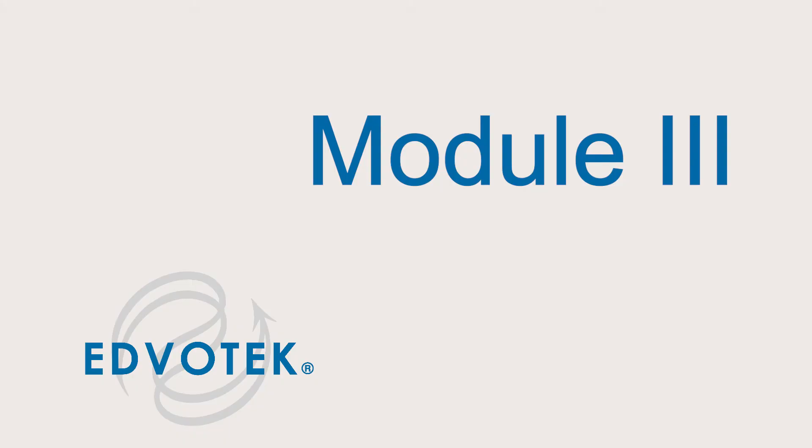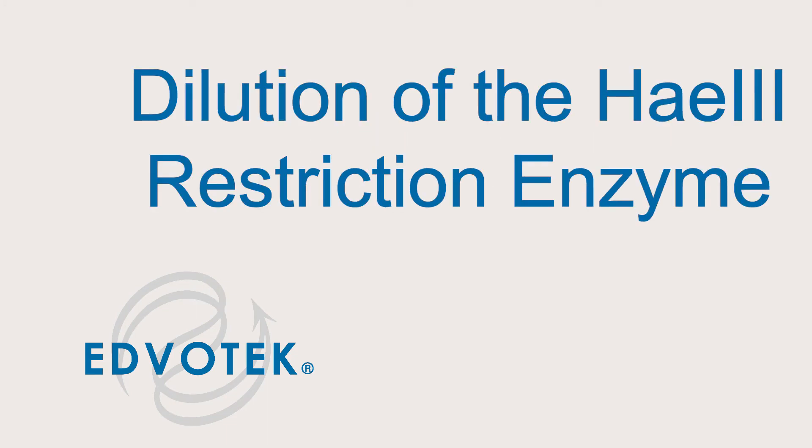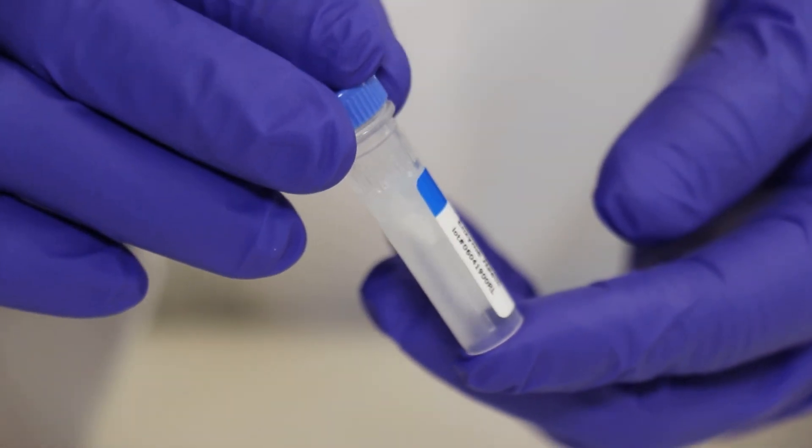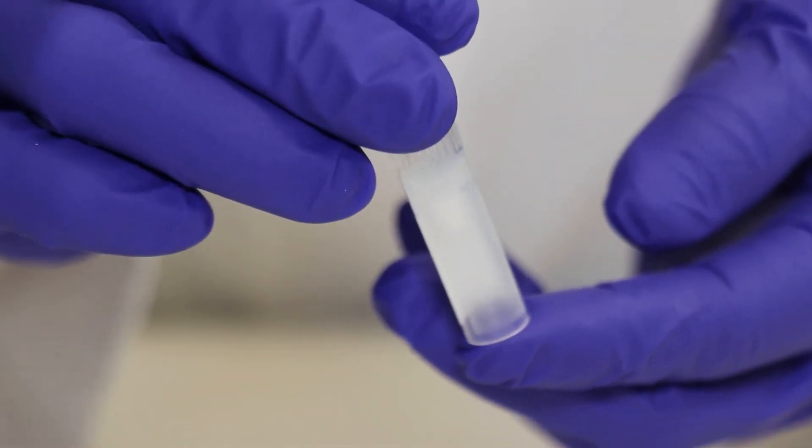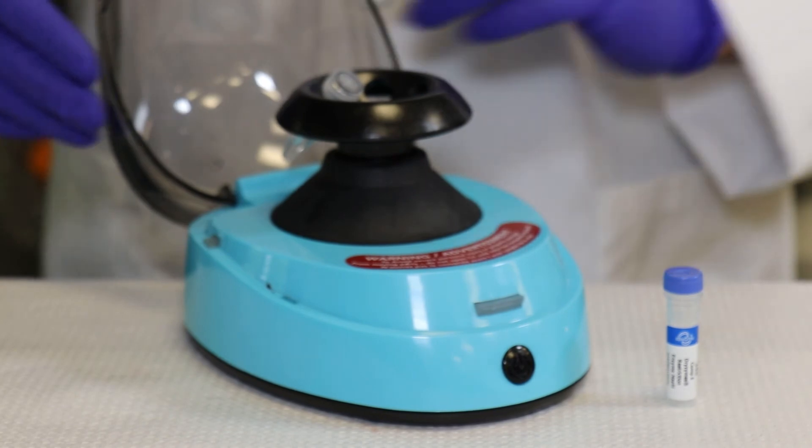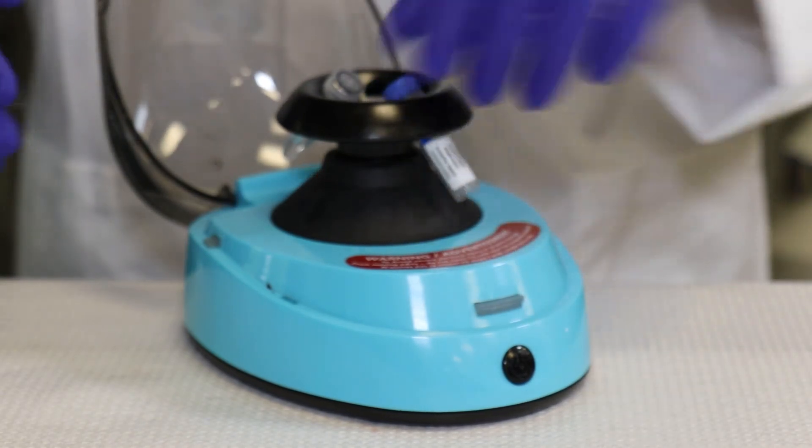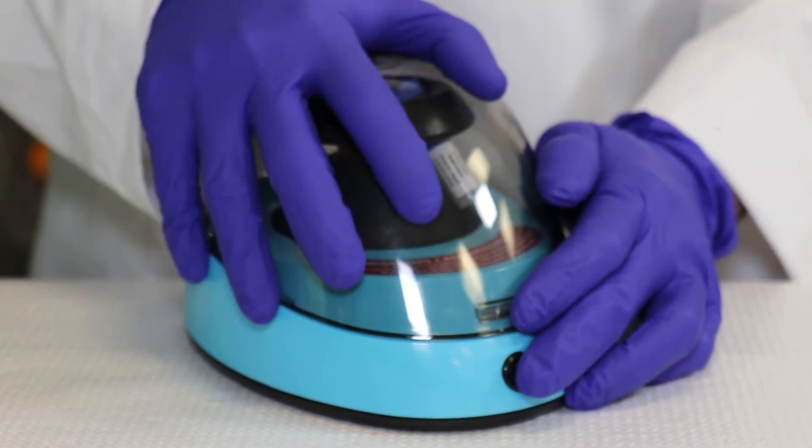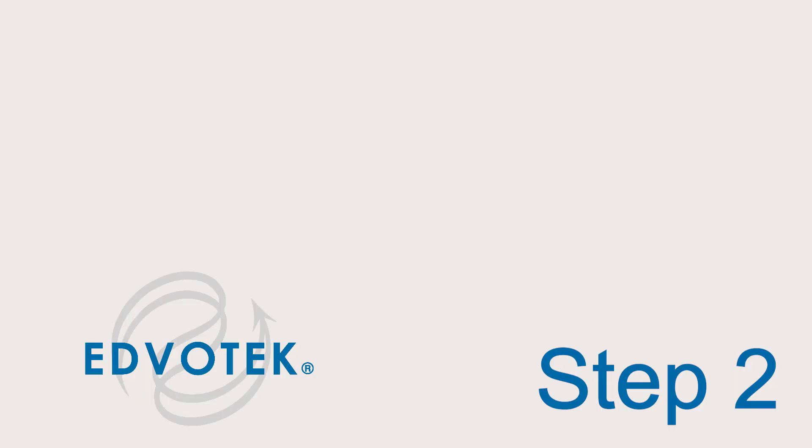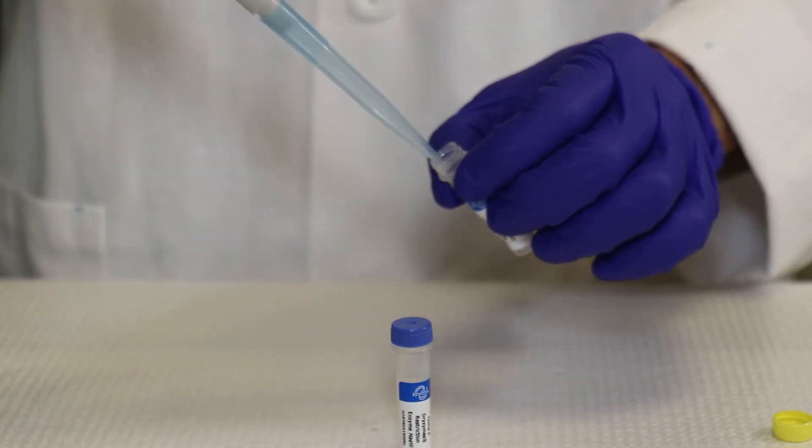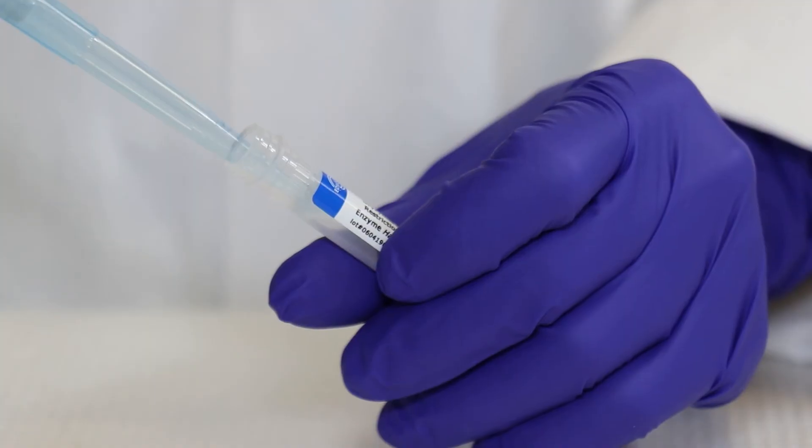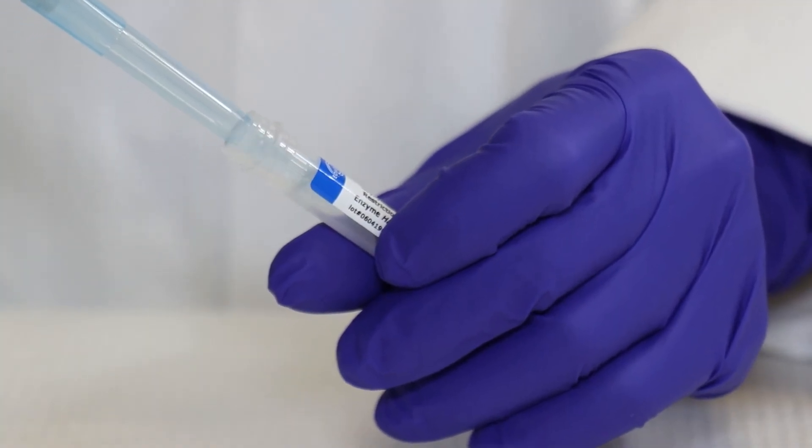Preparation for Module 3: dilution of the H3 restriction enzyme. Step 1: make sure that the solid material is at the bottom of the tube of Component E dryzyme restriction enzyme H3. If not, centrifuge the tube at full speed for 20 seconds. Step 2: add 200 microliters of Component F restriction enzyme dilution buffer.